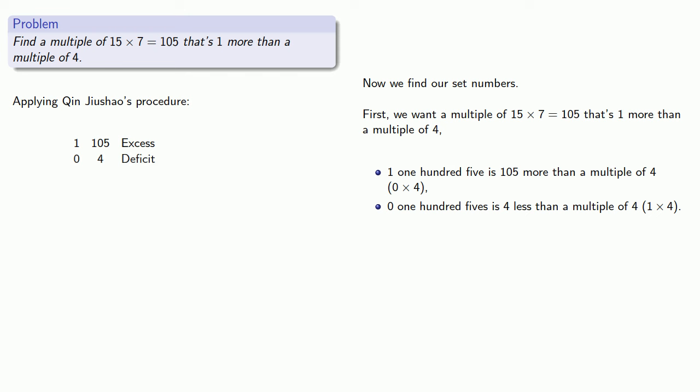We'll apply Change of Shows Procedure. We repeatedly subtract the smaller number from the larger number, and we can do that 26 times, multiply the corner numbers and add. We can read our result as saying that 1×105 is 1 more than a multiple of 4, and so for every unit left when dividing by 4, set 105.